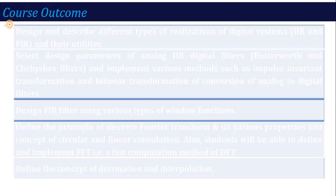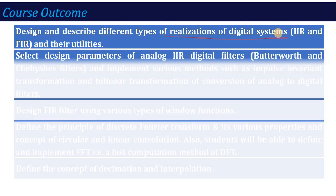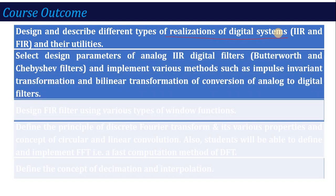Now for course outcomes: after completing Unit 1 you will be able to describe and design different types of realization of digital systems, whether IIR or FIR. After completing Unit 2 you will be able to design IIR digital filters in both analog and digital form using various methods — Butterworth, Chebyshev, Impulse Invariant, and Bilinear Transformation.